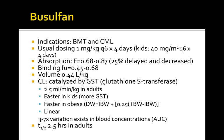Busulfan is cleared by metabolism catalyzed by glutathione S-transferase. Clearance is about 2.5 mL per kilogram per minute in adults. It's faster in kids because they have more glutathione S-transferase, and it's also faster in obese patients. So we use a dosing weight that is ideal body weight plus 25% of the excess fat weight — different from the dosing weight used for aminoglycosides.